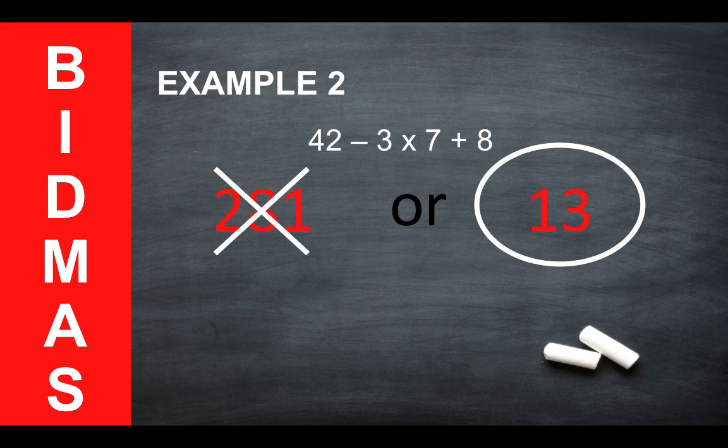And here's a breakdown of why. The multiplication stage needs to be worked out first, then the addition, then the subtraction. So 3 times 7 gives you 21. 21 plus 8 will give you 29. And 42 minus 29 will give you 13. So the correct answer is 13.